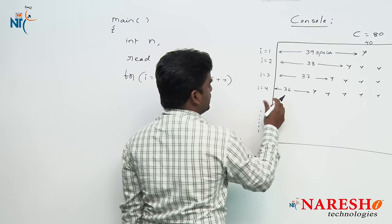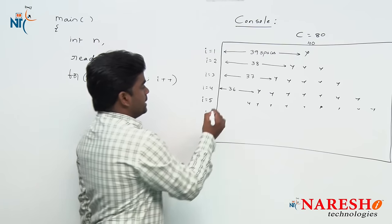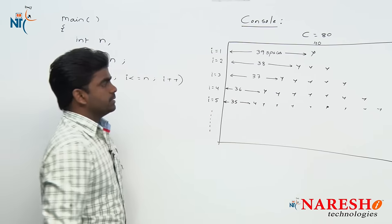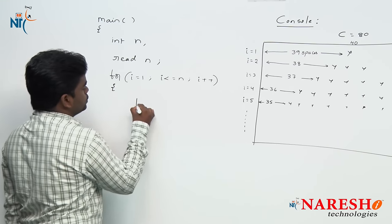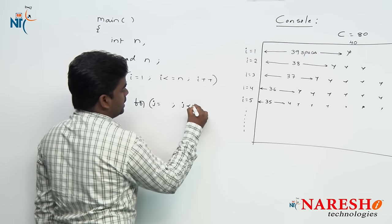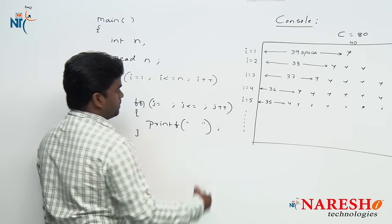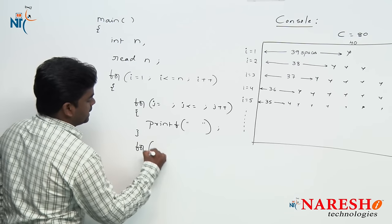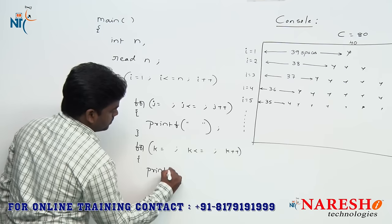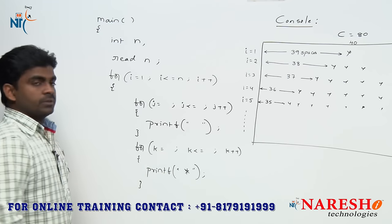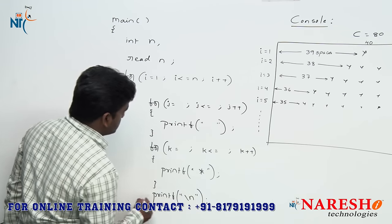Suppose n equals 5. Then i repeats 5 times, printing one more row each time — so 35 spaces on the fifth row. The outer loop repeats n times. One inner for loop is used to print spaces using j, with printf printing a space. A second inner for loop uses k to print stars. Once the first row is printed, we send control to the next line using printf with slash n.